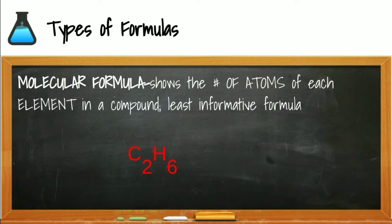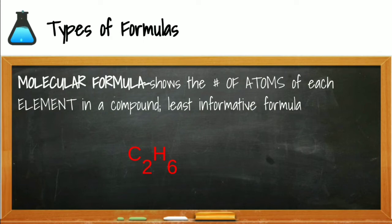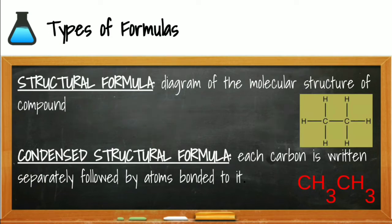There are three types of formulas we will look at when describing organic compounds. The first is the molecular formula, where we write the carbon then the hydrogen, showing just the number of each element in the compound — for example, two carbons and six hydrogens. The structural formula shows how all of the pieces are connected in the structure. In organic compounds, we always begin by bonding the carbons to each other and then fill in the hydrogens. The condensed formula shows what is attached to each carbon.